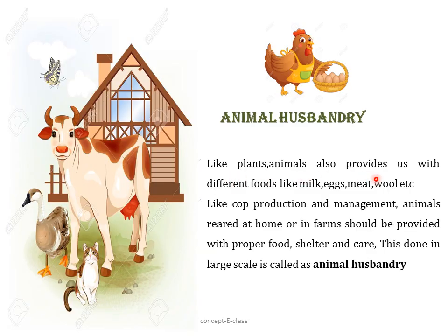Like plants, animals also provide us with different types of food like milk, eggs, meat, wool, and fish. Just as with crop production and management, animals that are reared at home or on a farm should be provided with proper food, shelter, and care. When this is done on a large scale, it is called animal husbandry — the process of taking care of animals by giving them proper food, shelter, and care.